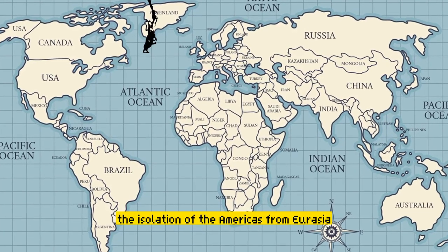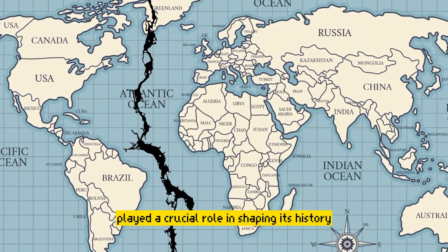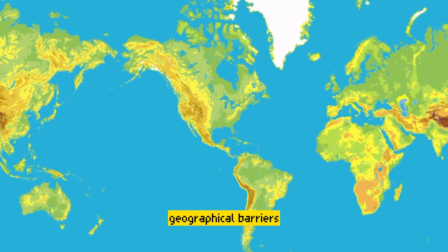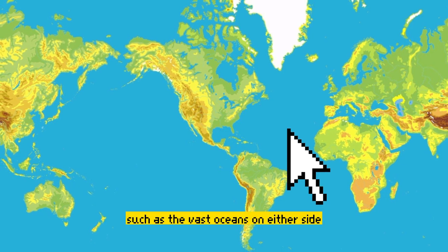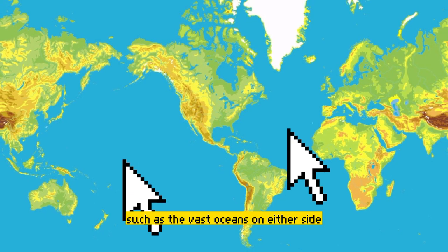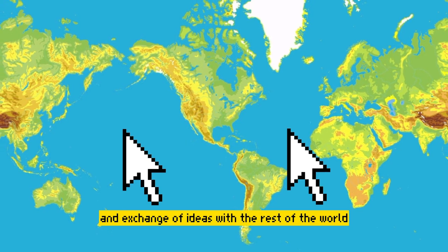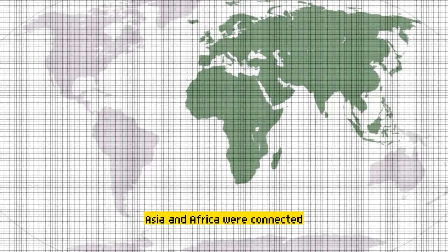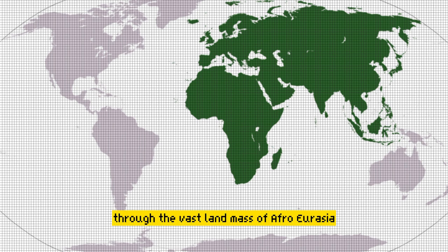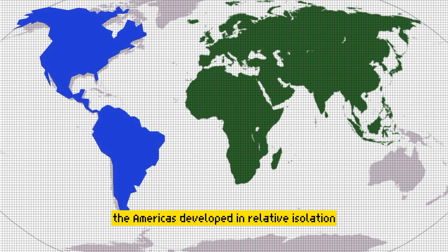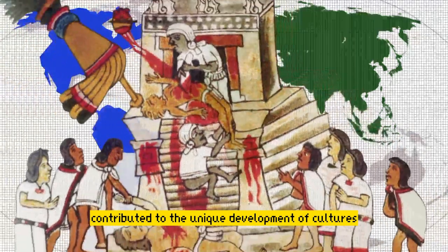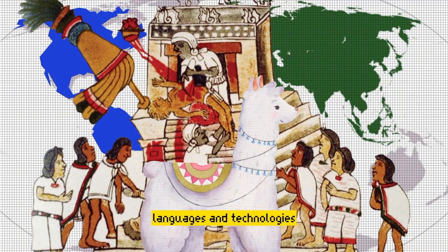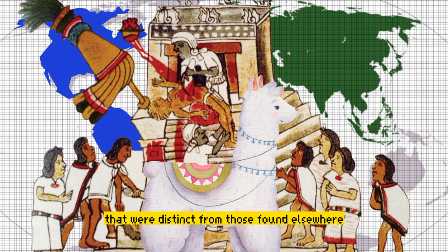The isolation of the Americas from Eurasia played a crucial role in shaping its history. Geographical barriers, such as the vast oceans on either side, limited contact and exchange of ideas with the rest of the world. While Europe, Asia, and Africa were connected through the vast landmass of Afro-Eurasia, the Americas developed in relative isolation. This isolation contributed to the unique development of cultures, languages, and technologies that were distinct from those found elsewhere.